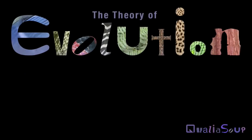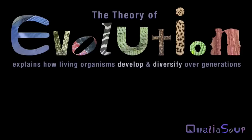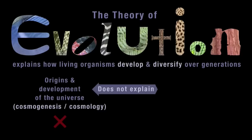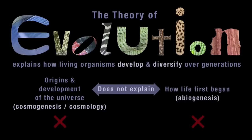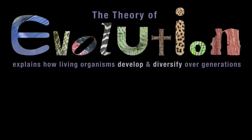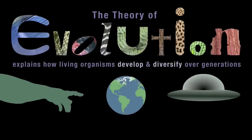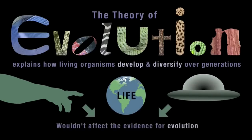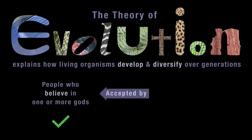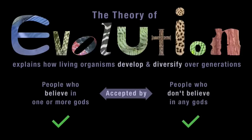The Scientific Theory of Evolution explains how lifeforms develop and diversify over generations. It doesn't claim to explain the development of the universe or how life was first begun — it explains how new varieties of lifeform emerge from earlier lifeforms. Even if life on Earth had been initiated by some kind of divine or alien intervention, that wouldn't affect the evidence for evolution, which is accepted by people who believe in one or more gods as well as those who don't.